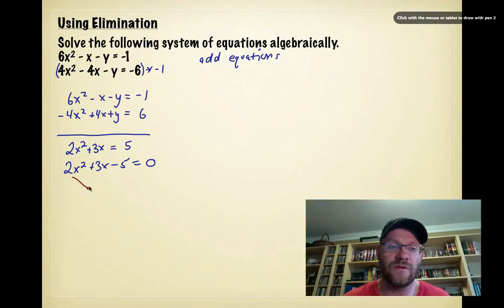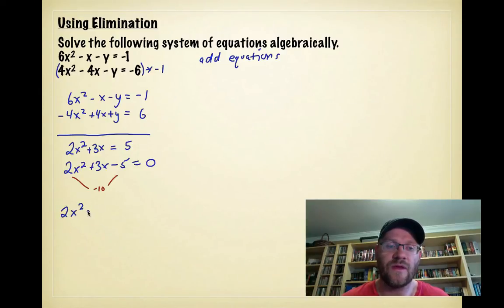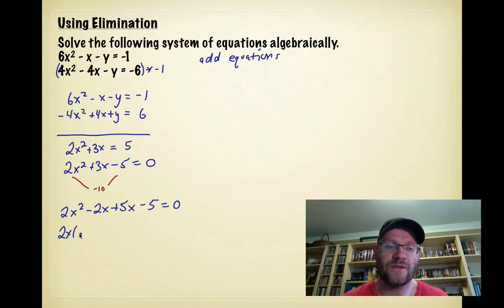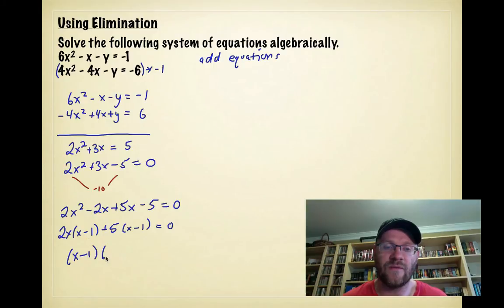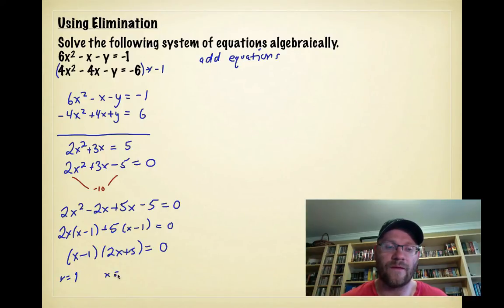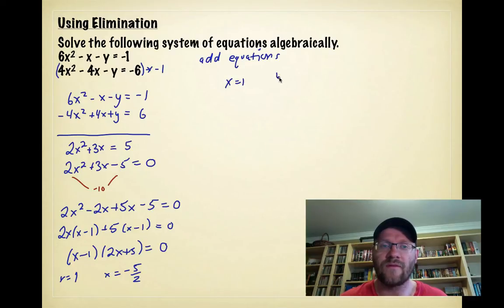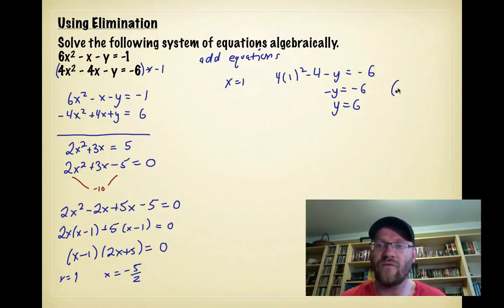Because of the 2 in front, I'll use decomposition to factor. I need two numbers that multiply to −10 and add to 3: those are −2 and 5, giving −2x and 5x. Grouping and removing common factors gives 2x(x − 1) + 5(x − 1) = (x − 1)(2x + 5). So x = 1 or x = −5/2. Plugging x = 1 into the second equation: 4(1)² − 4(1) − y = −6 → 0 − y = −6 → y = 6. The first point is (1, 6).